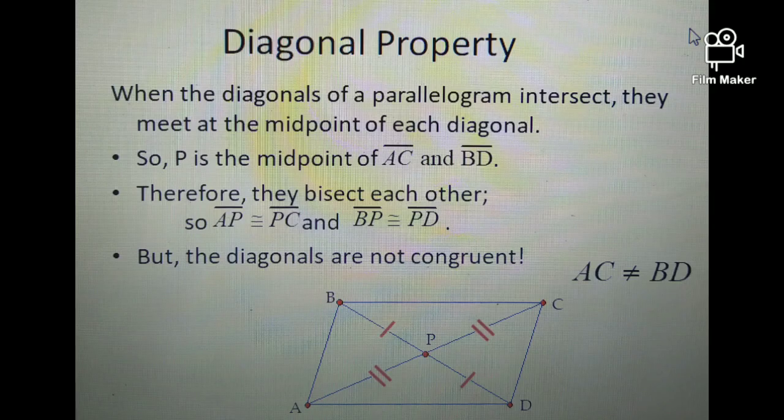In this figure, P is the midpoint of diagonals AC and BD. Therefore, they bisect each other. So AP is congruent to PC and BP is congruent to PD. But take note class, that the two diagonals of the parallelogram are not congruent.